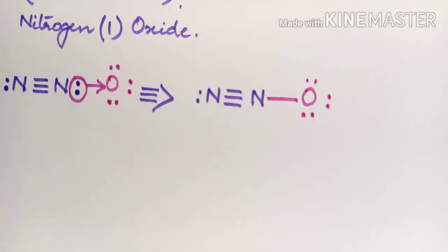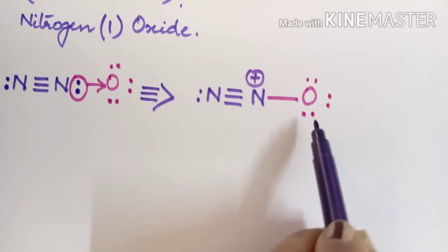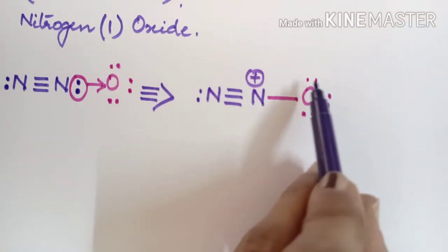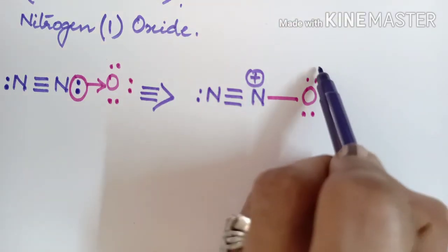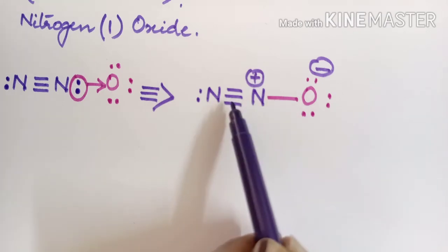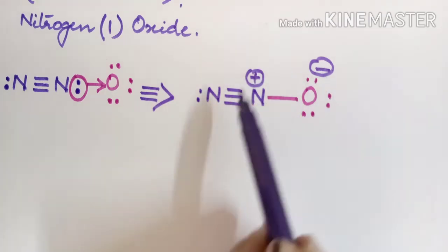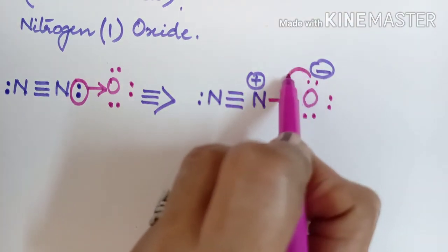On examining the structure, you find that the middle nitrogen is carrying four bonds and only four electrons are owned by it, so it carries a positive charge. Whereas oxygen is carrying a total of seven electrons in its valence shell, so it will get a negative charge. So here we have lone pair, single bond, triple bond — there is a chance of resonance.